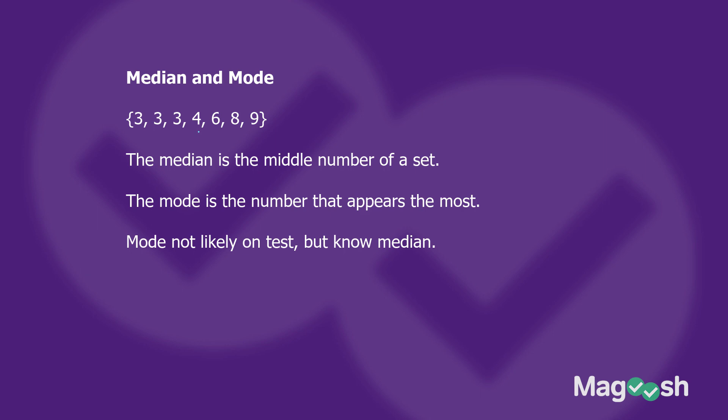What do we need to know for the test? The mode is not likely to really show up on the test — they don't test this too often. What they do test is the median, and they won't give you something as straightforward as above. They're going to make it a little bit more complicated, maybe like the four numbers shown here.